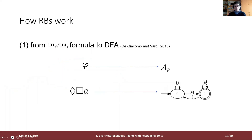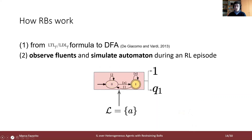Let's see in more detail how a restraining bolt works. From a temporal logic formula — for example, written in linear temporal logic on finite traces — we compute an equivalent deterministic finite automaton, or DFA. On the slide, you can see an example of the automaton corresponding to 'eventually always A'. Then, alongside the agent-world system, we simulate the automaton and give to the agent both the current state of the automaton and the reward associated to the temporal goal.